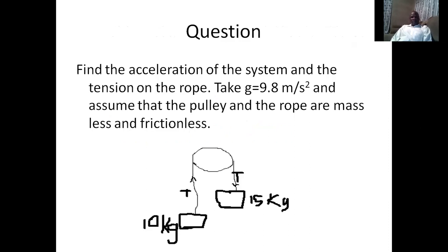Now we apply what we have learnt to a worked example. There is a pulley system with tensions in the rope — the tension force in the rope. We assume that acceleration due to gravity is 9.8 m/s², and that the pulley and the rope are massless, meaning we will not consider the masses of the pulley or the rope, and we neglect friction. We have two masses hanging: one mass is 15 kg and the other is 10 kg.